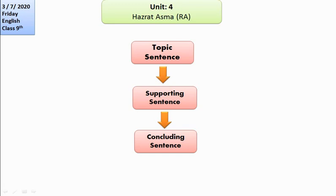Supporting sentences in a paragraph give more information in order to explain, describe, and develop the main idea in the topic sentence. When you write supporting sentences, you give examples, description, build argument, and cite different scholars, reports, and texts to support your topic sentence. In the concluding sentence, you sum up the whole idea and describe the main idea one more time with different words.